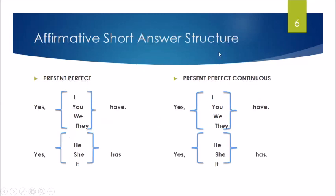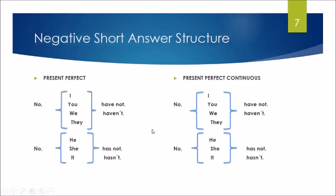To finish with the grammar structure, remember that we have two kinds of possible short answers: affirmative and negative. As you can see in this comparison of the two tenses, we have the same short answer. In affirmative we use yes, then the subject, and then the auxiliary have or has. For the negative, we use the same format: no, subject, haven't or hasn't.